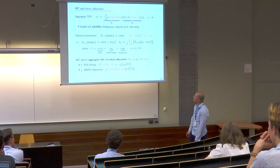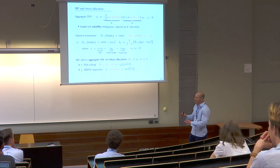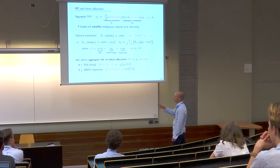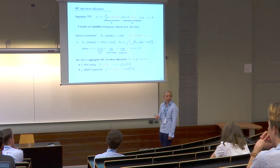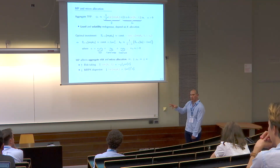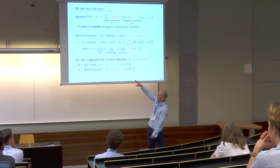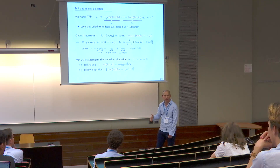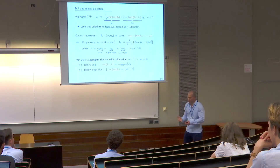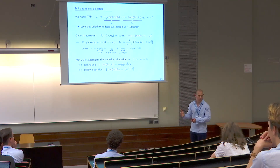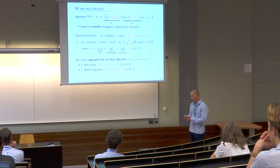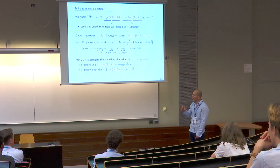Now that we understand kappa — the key object here — we can directly see how monetary policy affects aggregate risk and hence the microallocation. Consider counter-cyclical policy: a negative mu A reduces kappa and thus the amount of aggregate risk. Why? Aggregate risk comes essentially from volatility in consumption. If the central bank is stabilizing — counter-cyclical policy — it makes consumption less volatile, reducing aggregate risk in the world.